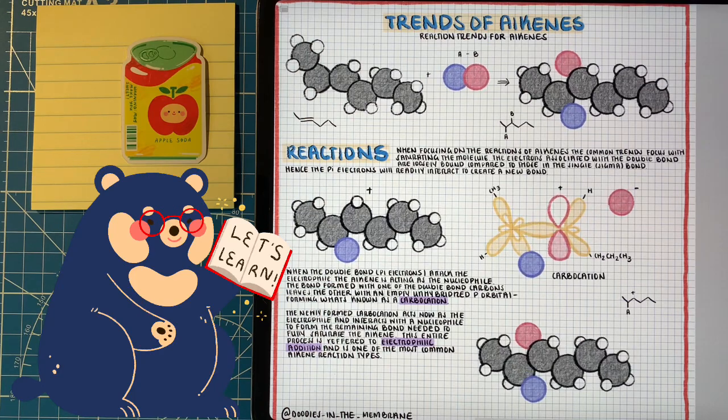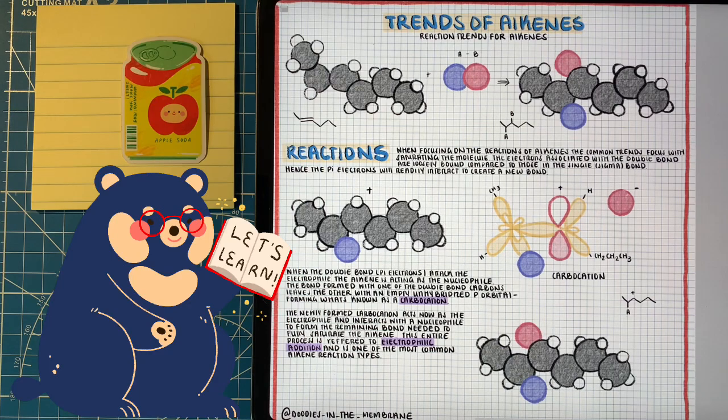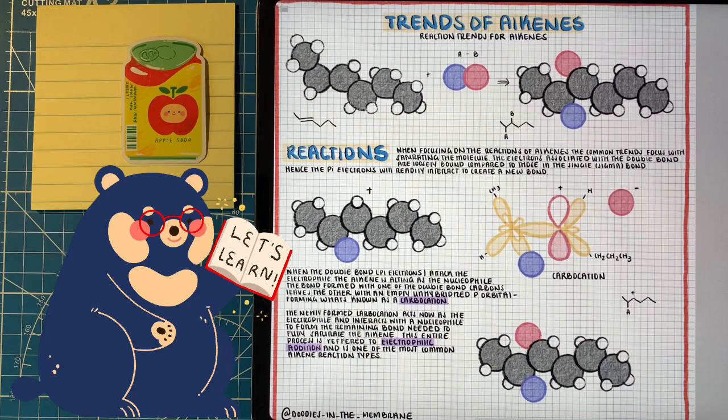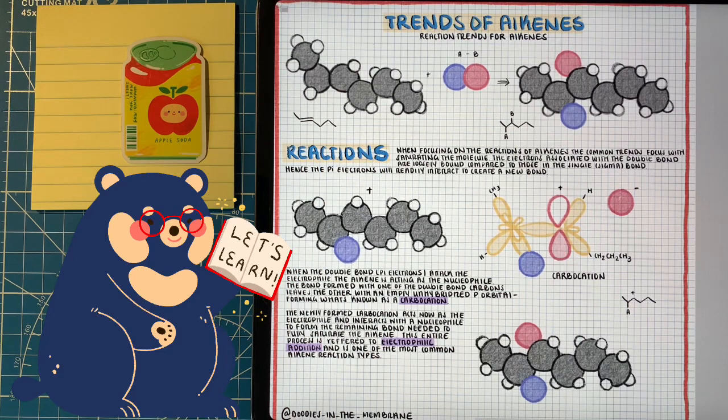Now looking back on the trends of alkenes, we can see how this matches the four reactions we've looked at before. We have our alkene, it's reacting with a molecule, and we're going to be saturating the double bond carbons.